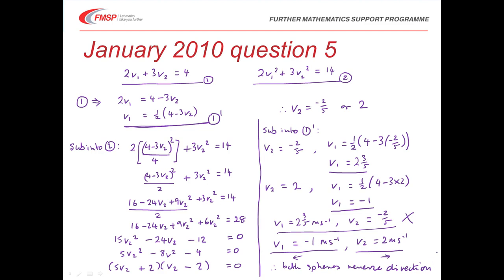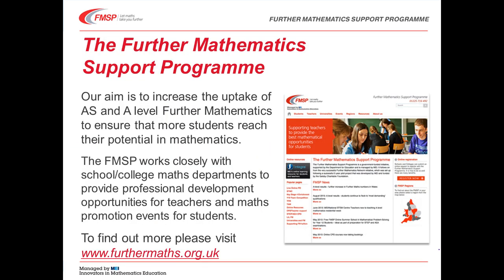I hope that's been a good refresher for E — the speed of separation equals E times the speed of approach — and for the use of conservation of linear momentum. Don't forget to check out the other OCR M2 revision videos.